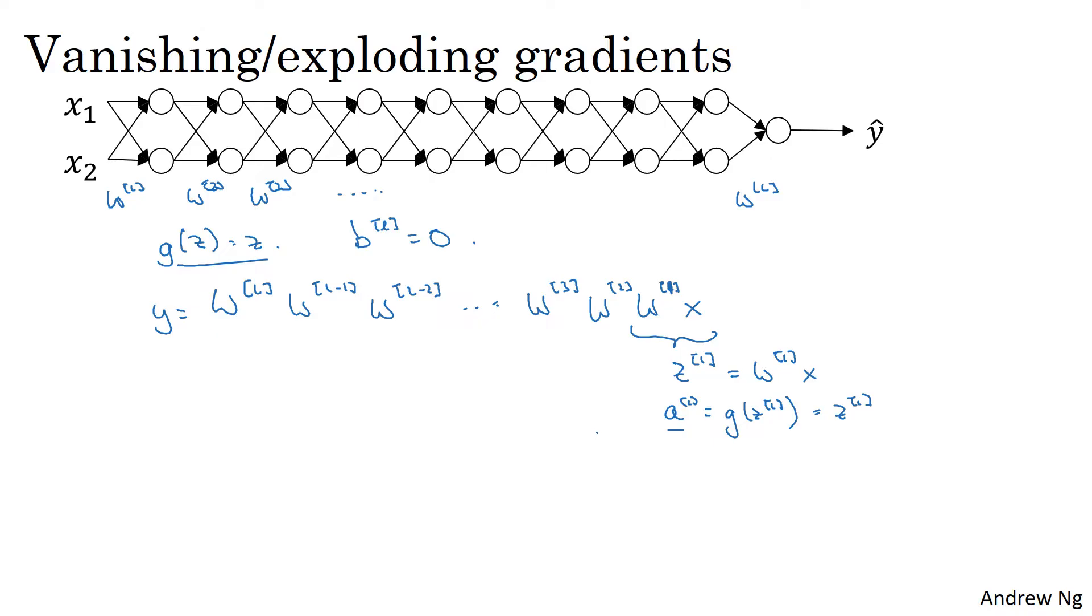And then by similar reasoning, you can figure out that W2 times W1 times x equals a2, because that's going to be g(z2), which is g(W2 times a1). If you plug that in here, this thing is going to be equal to a2. And then this thing is going to be a3, and so on, until the product of all these matrices gives you y hat.